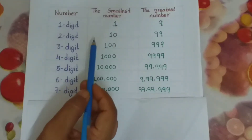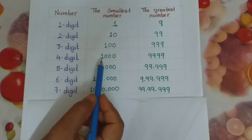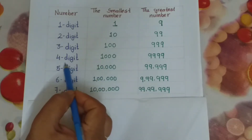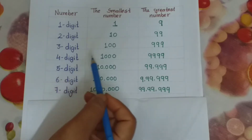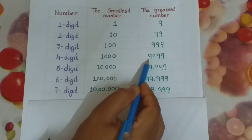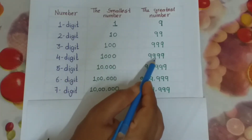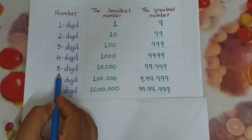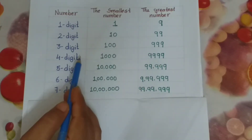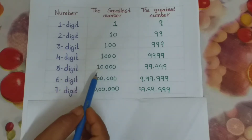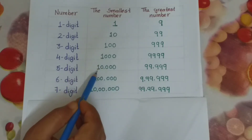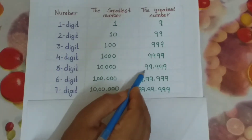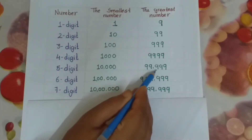Now for four-digit numbers: the smallest four-digit number is 1000 and the greatest four-digit number is 9999. For five-digit numbers: the smallest five-digit number is 10,000 and the greatest five-digit number is 99,999.